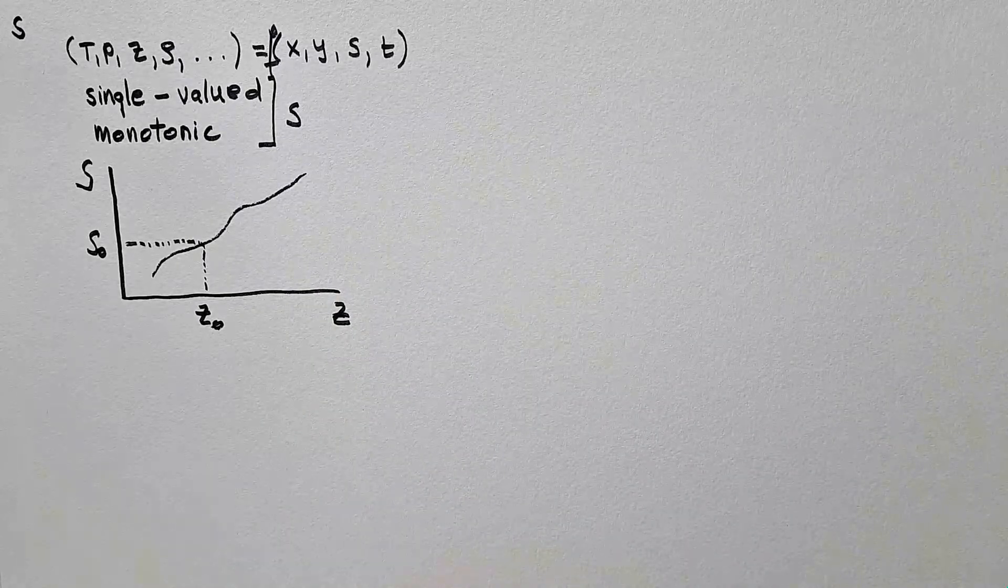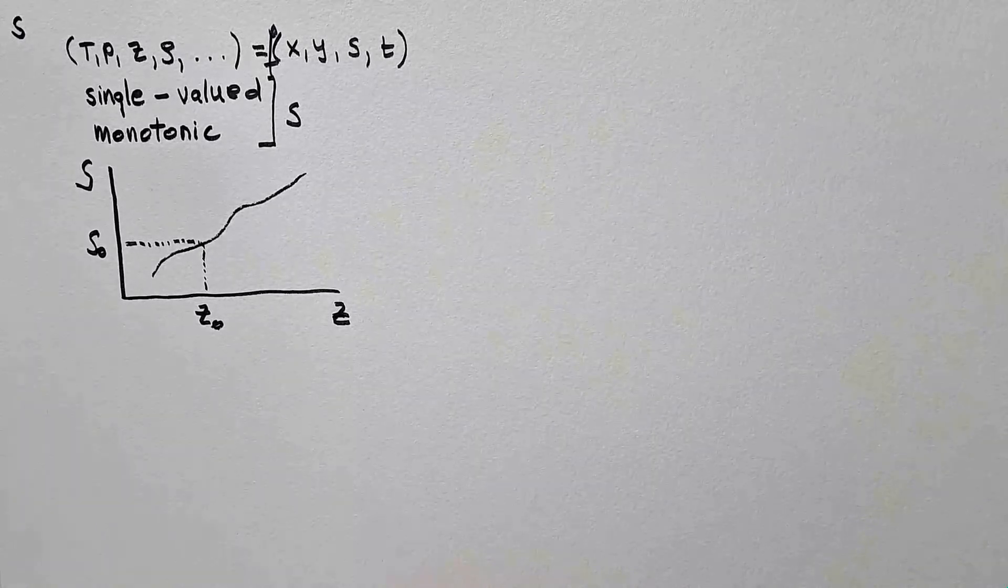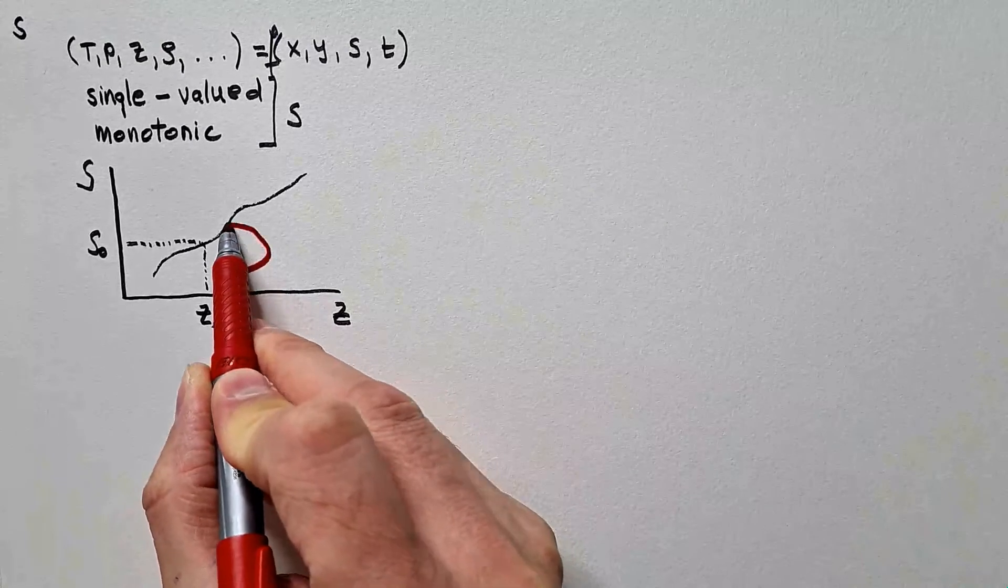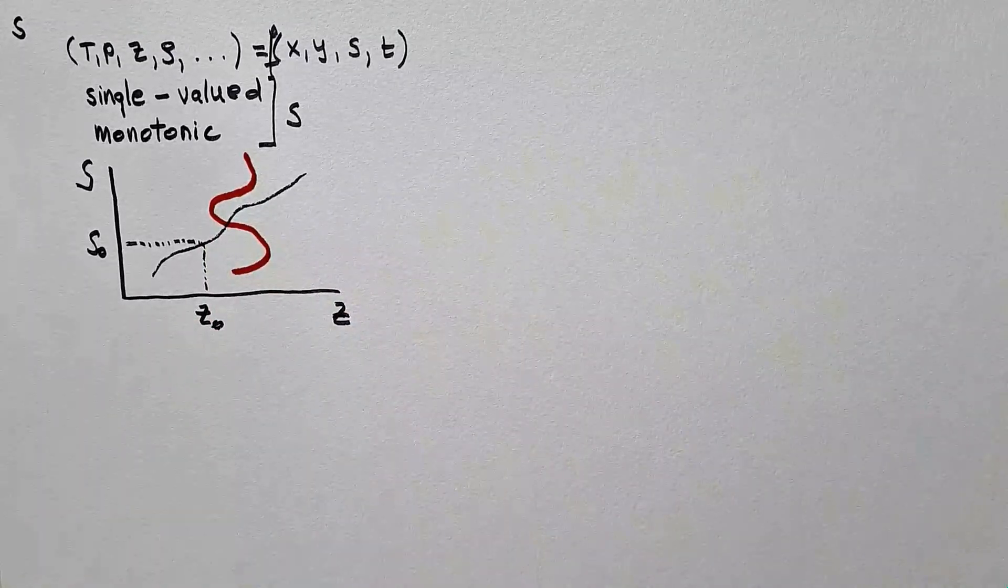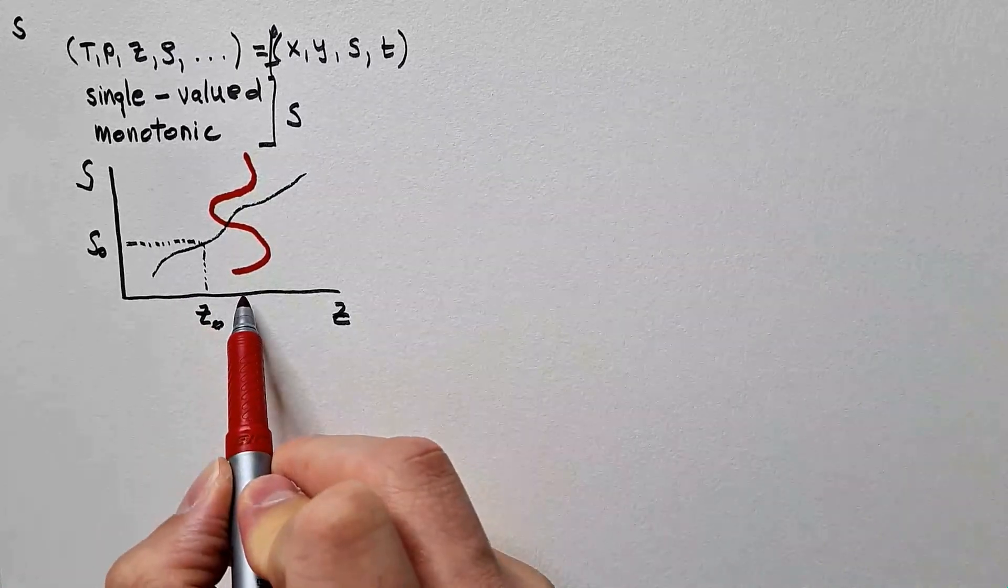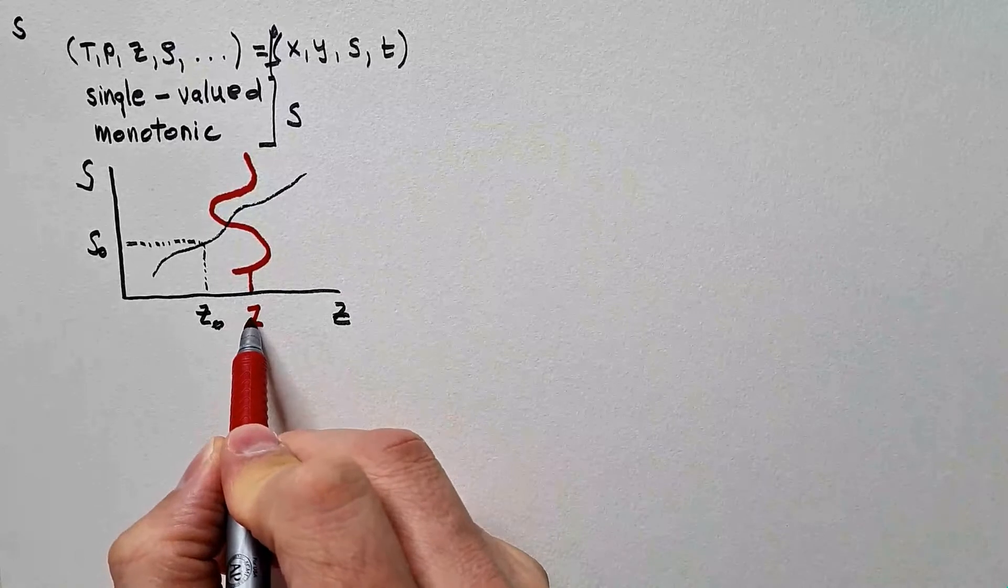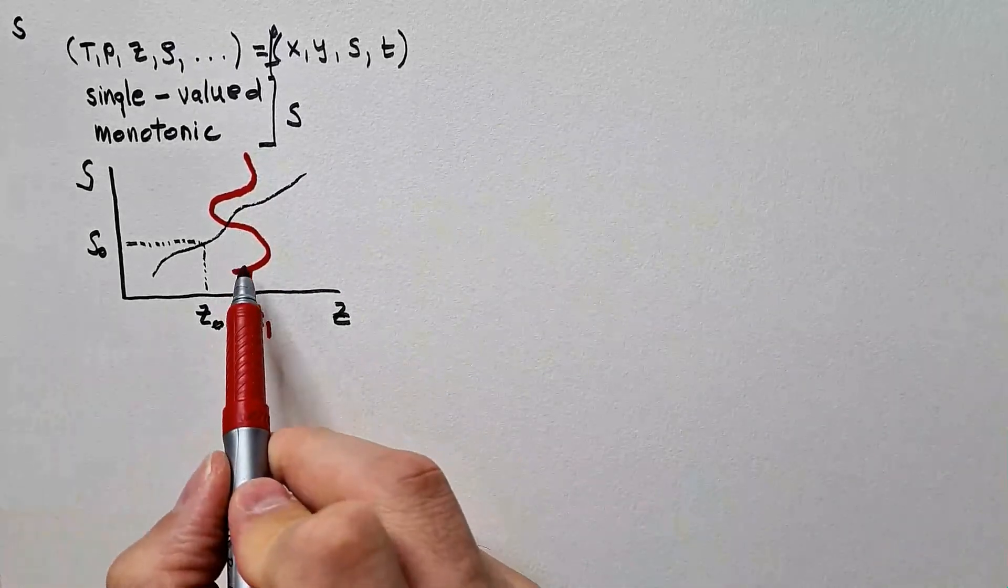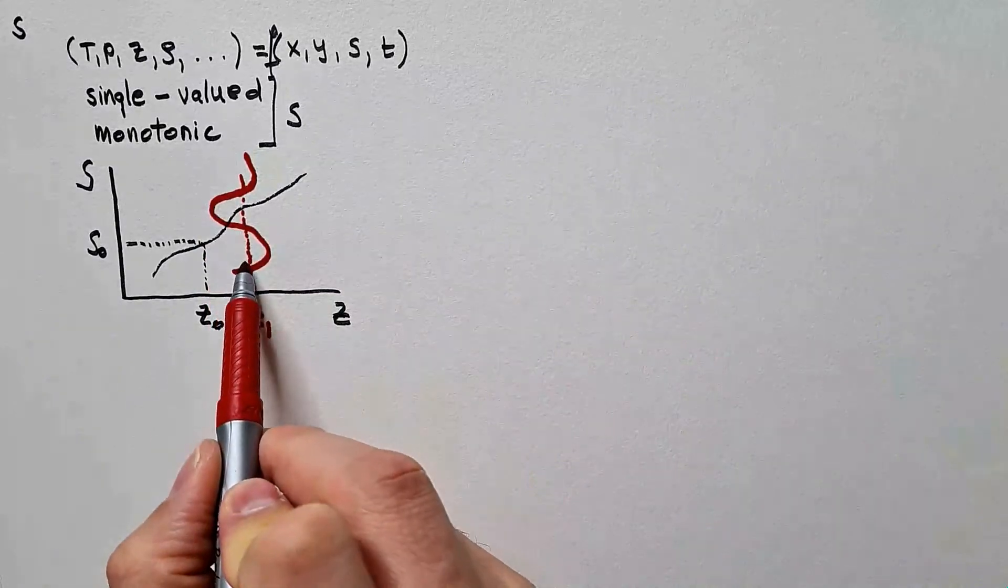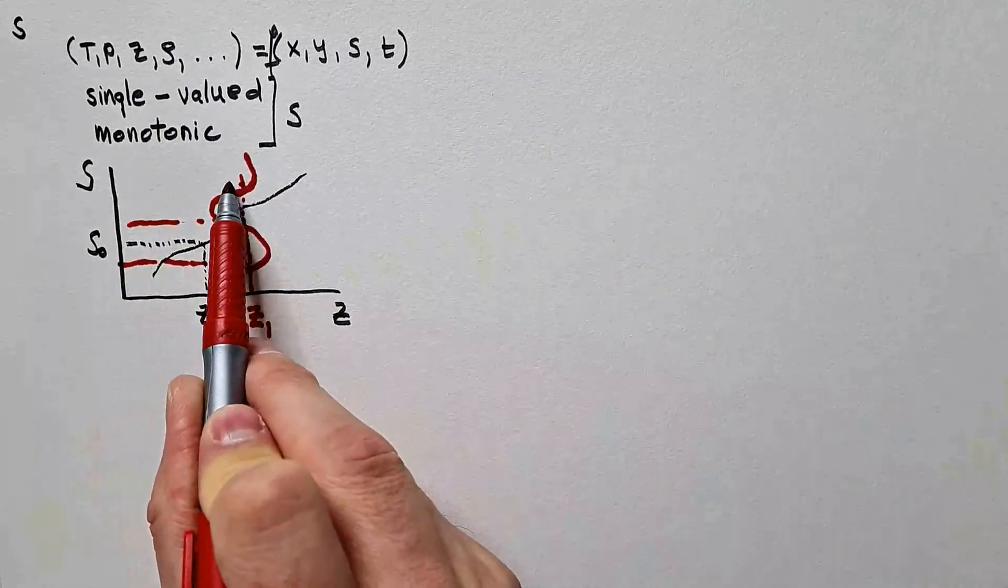What would be an example of non-single-valued function, which is also called, by the way, multi-valued function? Well, this would be a good example of such function. Because notice that in this case, at this height, let's call it z1, I have multiple values of s associated with this height.